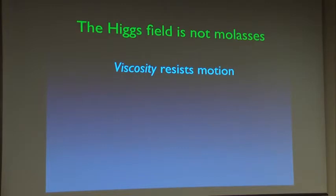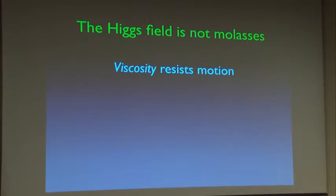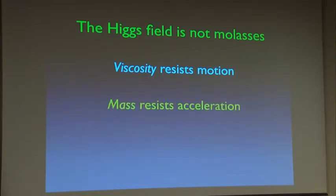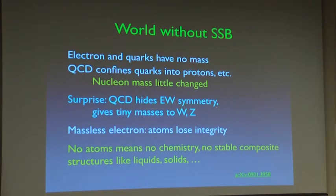The Higgs field gives mass to gauge bosons in a well-defined way and to fermions in a less constrained way. People often describe the Higgs field as 'like molasses,' but that's wrong: viscosity resists motion, while mass resists acceleration. This phenomenon of mass acquisition is fundamentally quantum mechanical, and I don't know of any classical explanation for it.